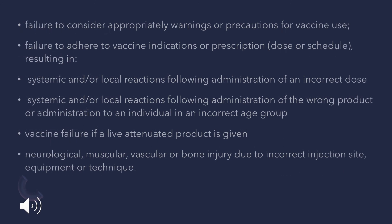Errors in vaccine prescription or non-adherence may also develop if precautions and warnings on the vaccine are not followed, or if patient compliance with physician instructions is not maintained. If vaccine indications, precautions, or doses are not followed — for example, using an incorrect dose or missing a scheduled vaccine — AEFIs may develop. Using a wrong product in the wrong age group may also lead to AEFIs.